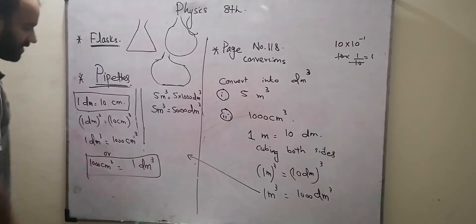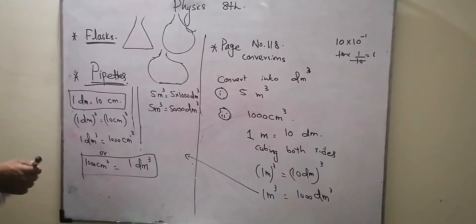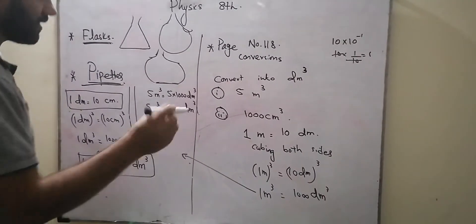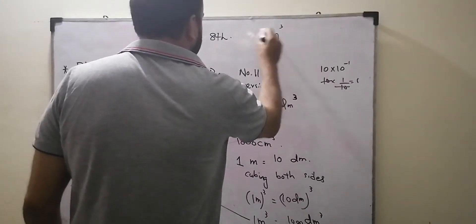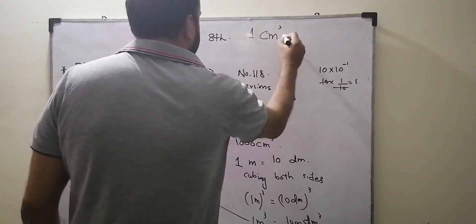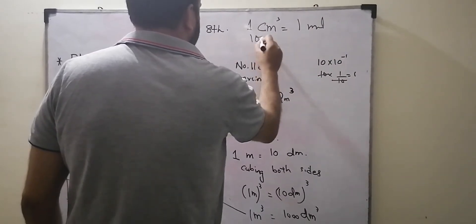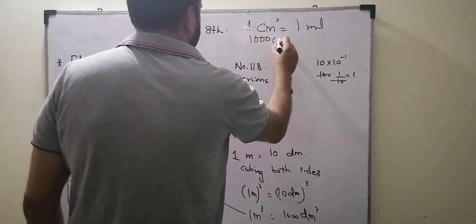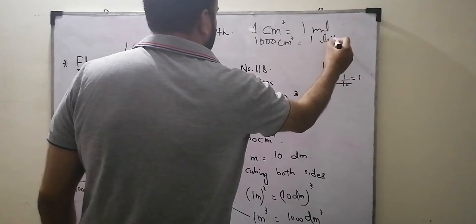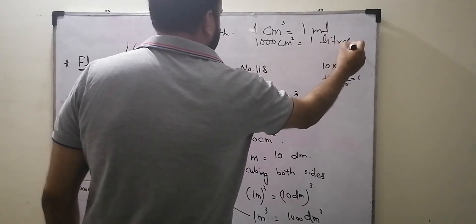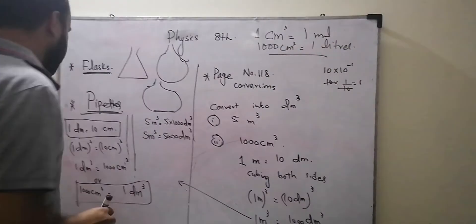Basically, 1 decimetre cubed equals 1000 centimetre cubed. And 1 centimetre cubed equals 1 millilitre.